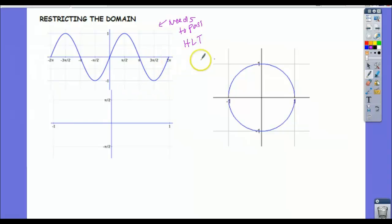we need this to pass the horizontal line test. So there's no other way to do it than to simply cut off a section of the graph so that it is forced to fail, forced to pass the horizontal line test. So I'm going to do that here.